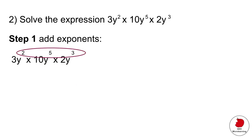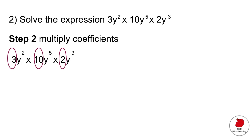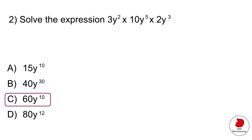So you add the exponents. That's the first thing you're going to do. You're going to add two plus five plus three. That gives you ten. So your exponent is going to be y raised to the ten. And then step two would be to multiply the coefficients. The coefficient is the number in front of the variable. So three times ten times two, and that gives you 60. The correct answer would be C.